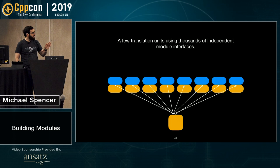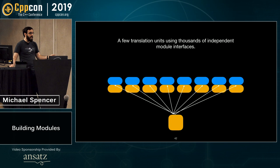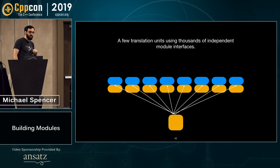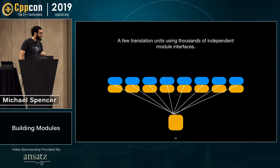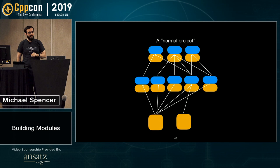A slightly more realistic scenario: interfaces that actually have implementations. In the header world, your parallelism goes as wide as you have implementation files. But with modules, you do have to wait until you build all those header units or module interfaces before you can do the rest — but it scales ridiculously well.